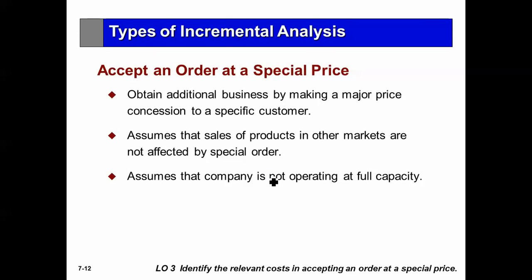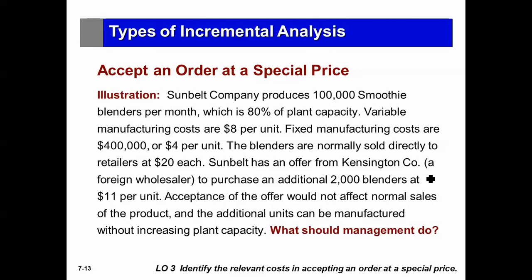Accepting an order at a special price: businesses sometimes sell their products in their local market — like here in the UAE — but sometimes a customer comes from another part of the world and wants to buy your product at a special price, one time only, and take it back to their country and sell it. If you're not operating at full capacity and you have the extra capacity to produce this product, what should you do? Let's take an example. Sunbelt Company produces 100,000 smoothie blenders per month, which is 80% of their plant capacity — so they have extra capacity.